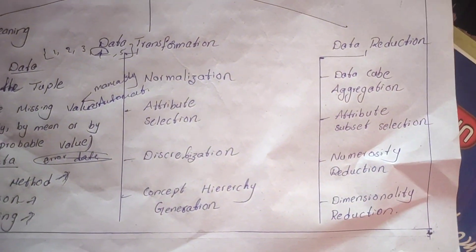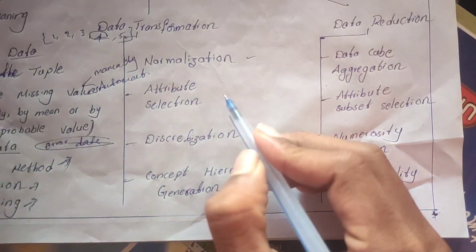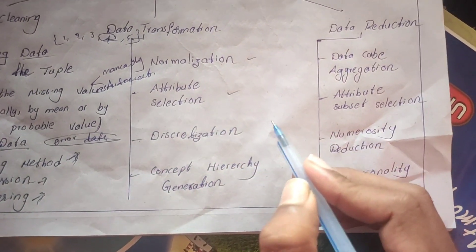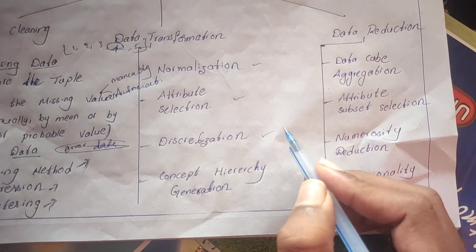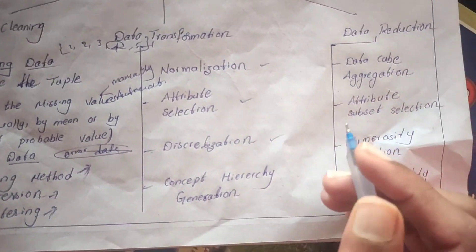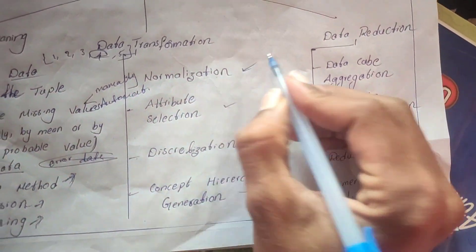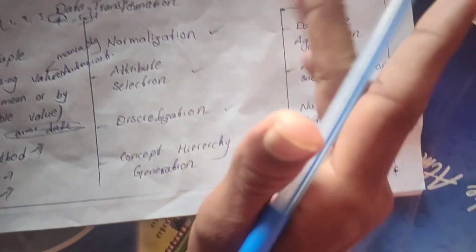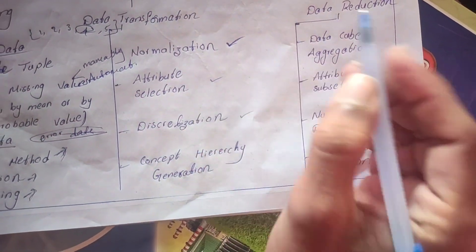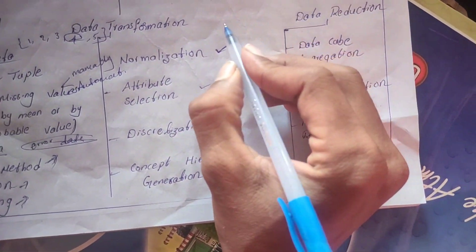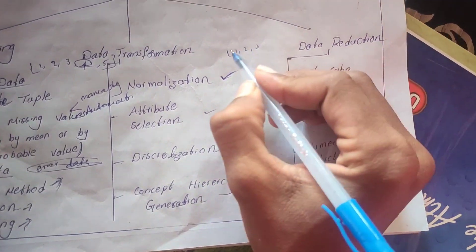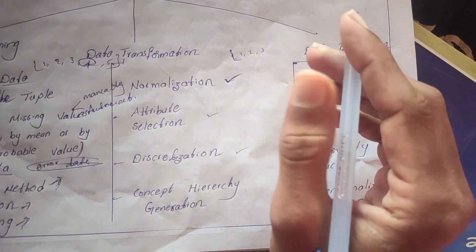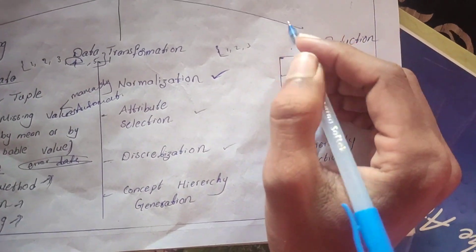Next is data transformations. In data transformations there are four methods: normalization, attribute selection, discretization, and concept hierarchy. In normalization, data is converted into a specific range — only numeric data can be scaled into a specific range.